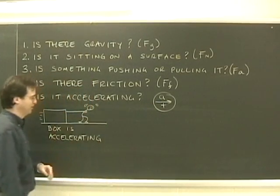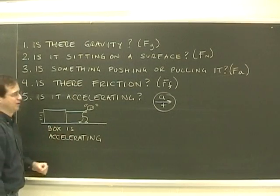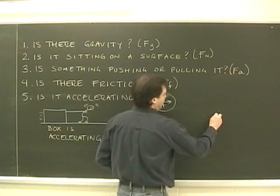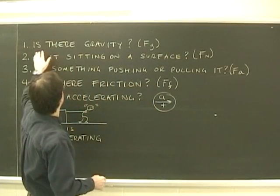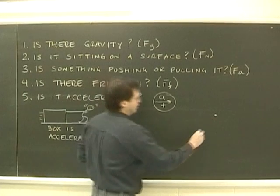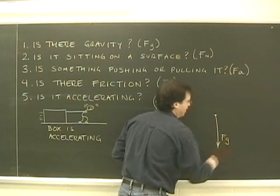Okay, so let's try a really simple one. Here's somebody pulling a box, and the box is accelerating. So I'm going to draw my free body diagram. I'm going to put a dot there to represent the object. We don't actually draw the box. First question, is there gravity? Yes, there's gravity. So we draw that, and we label it Fg.